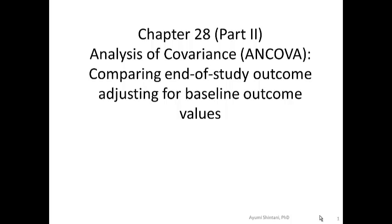In this video, I'm going to show how to analyze data from an RCT when you measure the outcome variable at baseline. The analysis involves two repeated measures, one at the baseline and one at the end of the study, and the variable of interest is a continuous variable. We will talk about a technique called analysis of covariance, which is a linear regression of continuous end-of-the-study outcome as a dependent variable, effectively adjusting for baseline outcome value as a covariate.